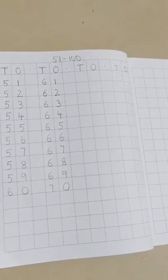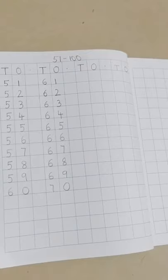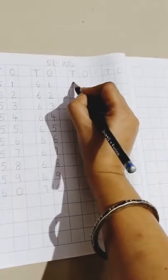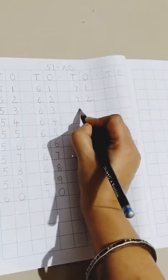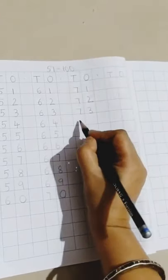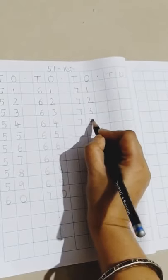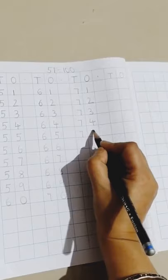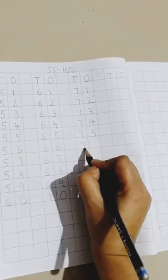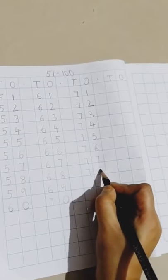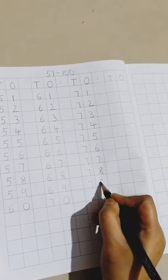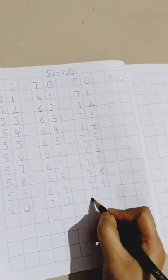Moving on to the third line. Now we are going to write from 71 to 80. 71, 72, 73, 74, 75, 76, 77, 78, 79, 80.